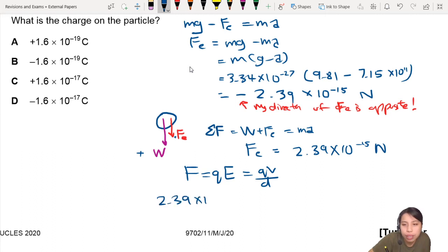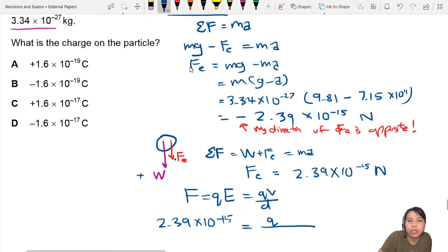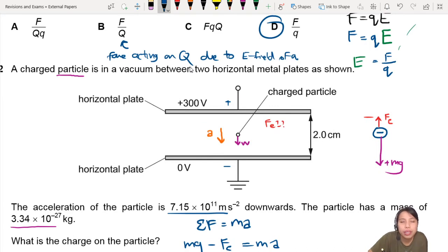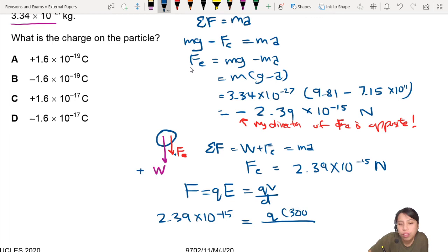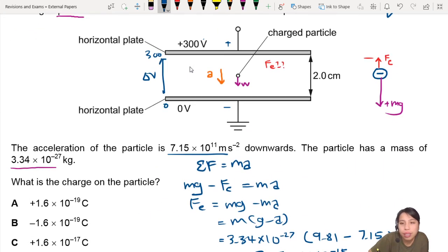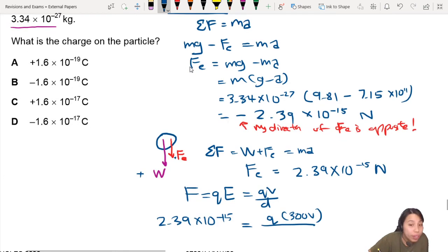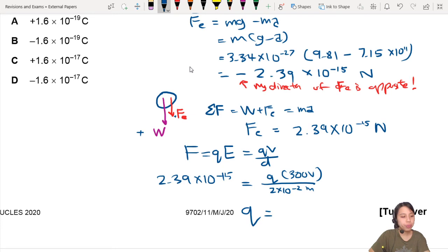So 2.39 times 10 to the negative 15 equals Q times, what is V? V is the potential difference between the plates. So you go up here, between the plates, this is our delta V from 300 to 0, so 300 volts, divide by the distance, separation distance. That's here, 2.0 centimeters. Converting to meters, so 2 times 10 to the negative 2 meters. Here you would get a value of Q of 1.592 times 10 to the negative 19 coulombs, also known as 1.6 times 10 to the negative 19.